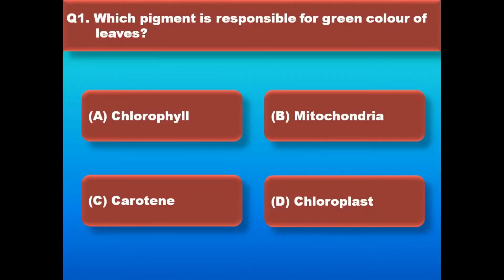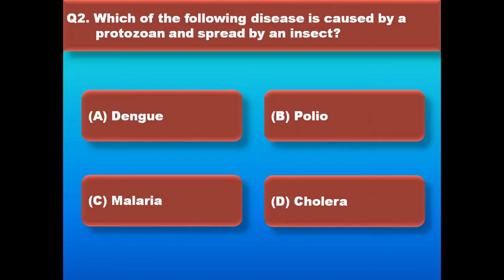Which pigment is responsible for the green color of leaves? Right answer is chlorophyll. Which of the following disease is caused by a protozoan and spread by an insect?